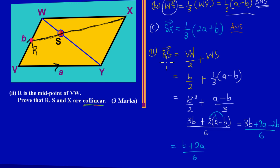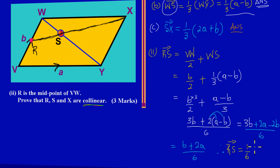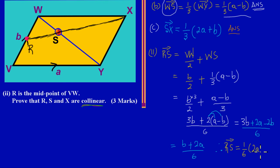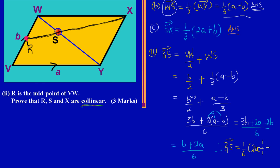Simplifying, 3b minus 2b gives b, and we have 2a, so the result is (2a plus b) over 6, which equals one-sixth of (2a plus b). Therefore the distance RS equals one-sixth of (2a plus b). Now let's check the ratio of the distance R to S and the distance S to X.